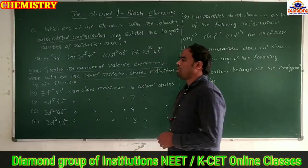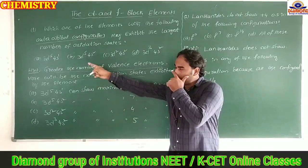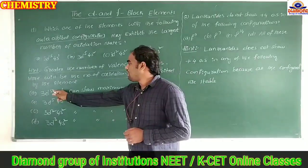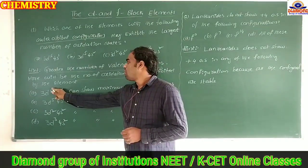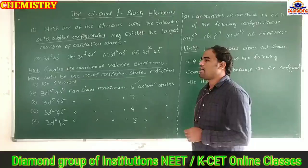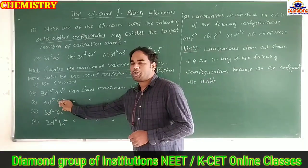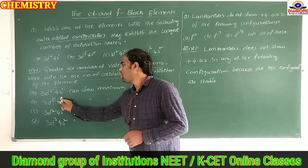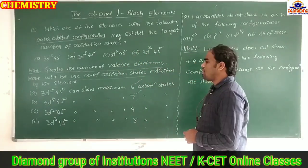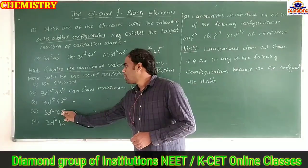For option A (3d⁵4s¹): 5 + 1 = 6 valence electrons, so it can show a maximum of 6 oxidation states. For option B (3d⁵4s²): 5 + 2 = 7 valence electrons, so it can show a maximum of 7 oxidation states.